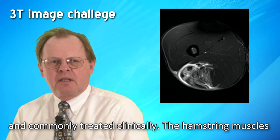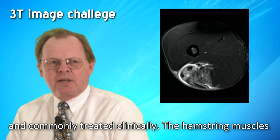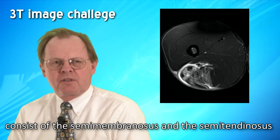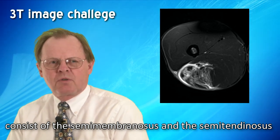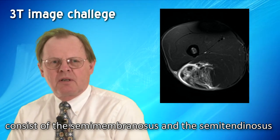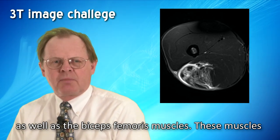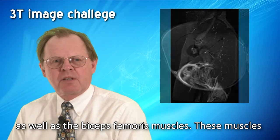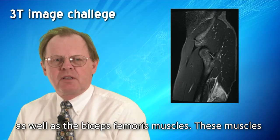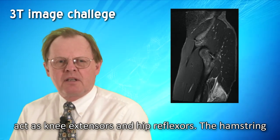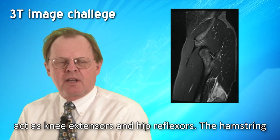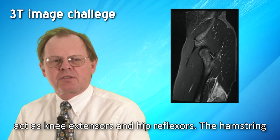The hamstring muscles consist of the semimembranosus and the semitendinosus, as well as the biceps femoris muscles. These muscles act as knee flexors and hip extensors.